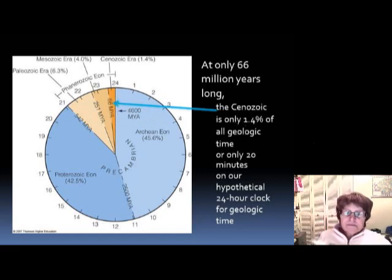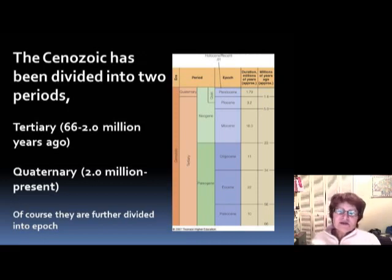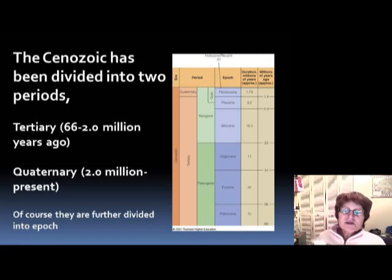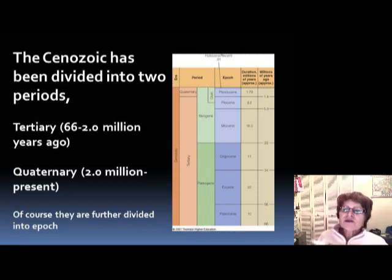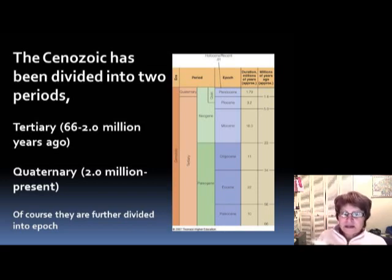The more detailed divisions of the Cenozoic include two big divisions: the Tertiary and the Quaternary. The Tertiary spans 66 to 2 million years ago, and the Quaternary includes the last 2 million years of Earth history.